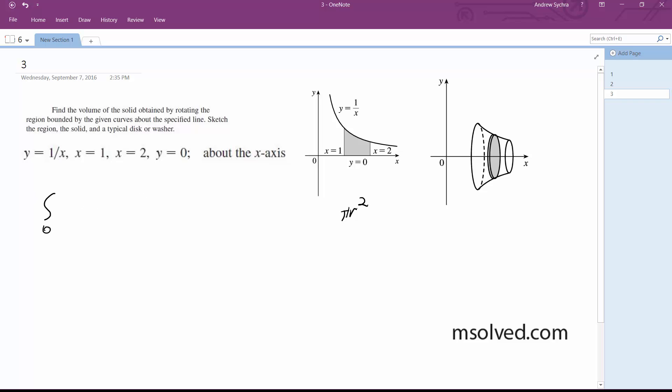we're going to have integral from 1 to 2, pi times 1 over x squared, dx.